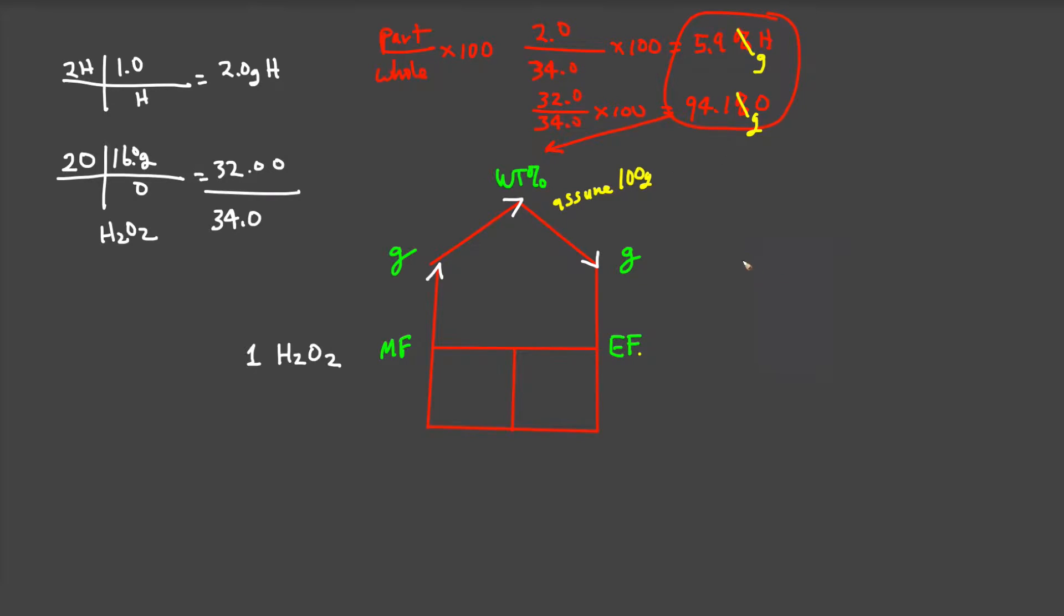The next step is to convert from grams of material to an empirical formula. We know it has hydrogen and oxygen in it. So our goal is to find how many moles are in 5.9 grams of hydrogen and how many moles of oxygen from 94.1 grams.